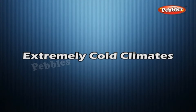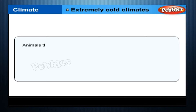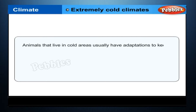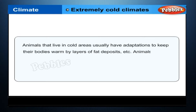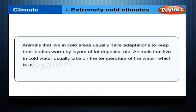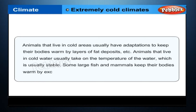Animals that live in extremely cold areas usually have adaptations to keep their bodies warm by layers of fat deposits. Animals that live in cold water usually take on the temperature of the water, which is usually stable. Some large fish and mammals keep their bodies warm by excessive muscular activity and thick, waterproof fur.